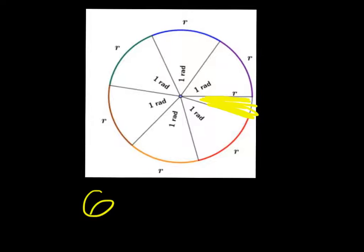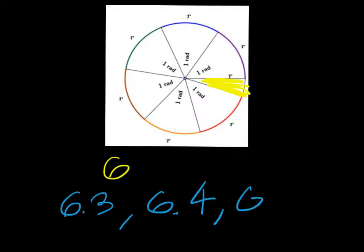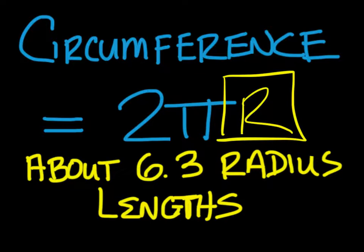Now guess the closest decimal approximation to the nearest tenth of how many radians you can get around one circle. Guesses are 6.3, 6.4, 6.2. The circumference of a circle is 2π, and most commonly 2πr. But in a unit circle the radius is one, so it doesn't change anything. If you multiply 2 times pi, you get approximately 6.3. So 6.3 radians approximately in one circle — and 6.3 was the right guess.